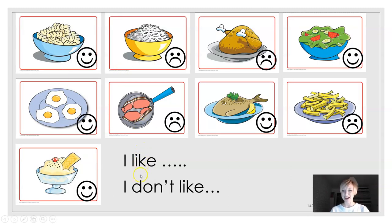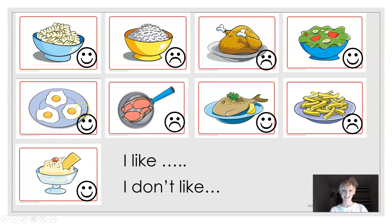Now — I like, lubię; I don't like, nie lubię. Zatrzymajcie tutaj nagranie i powiedzcie mi, patrząc na buźkę, właściwe zdanie dotyczące każdego z tych obrazków — albo I like, albo I don't like. Przypomnijmy sobie nazwy tych wszystkich części jedzenia. This is pasta, rice, chicken, salad, eggs, bacon, fish, chips, ice cream. Zatrzymujemy nagranie i mówimy zdania.